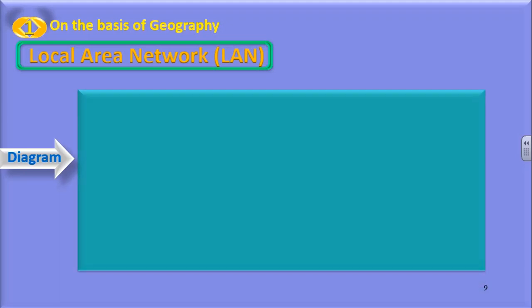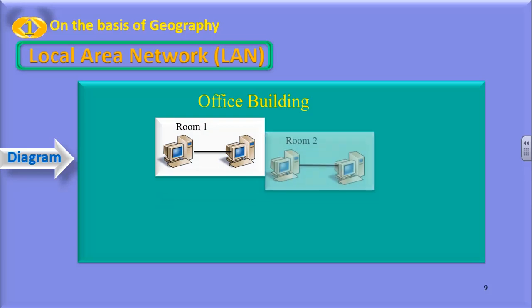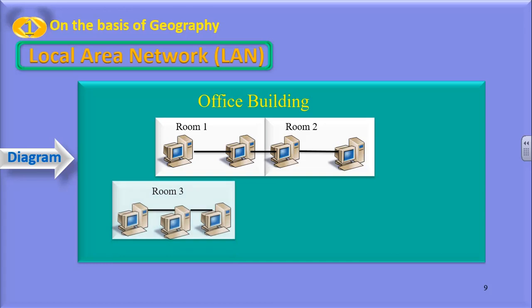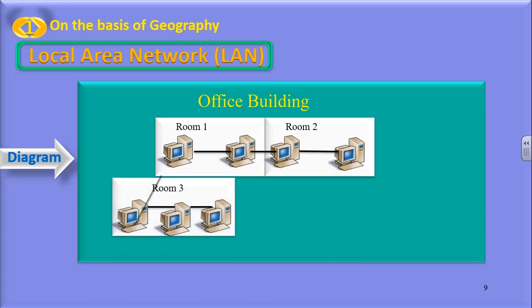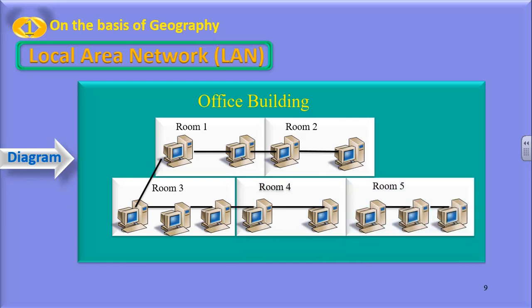You can see the example of local area network in this diagram. There is an office building with a number of rooms, and in every room there are few computers. These computers are in different rooms and are connected to each other. It is a simple model of local area network — all these computers are in a particular building and they are connected to each other.